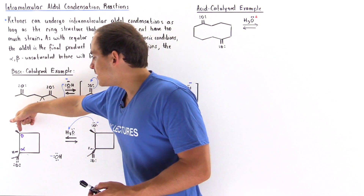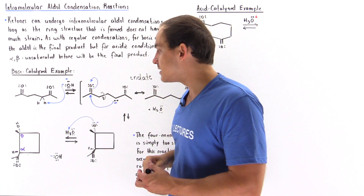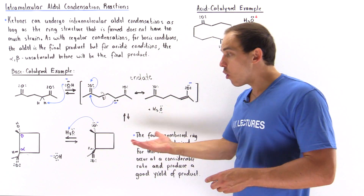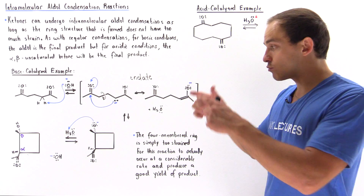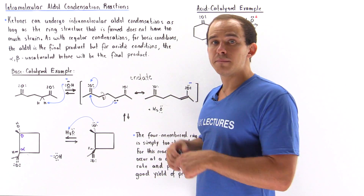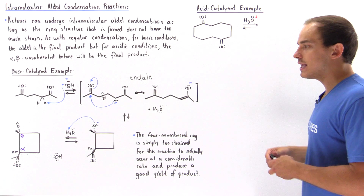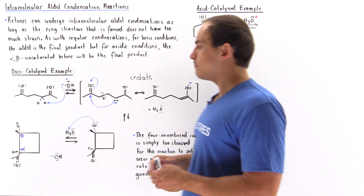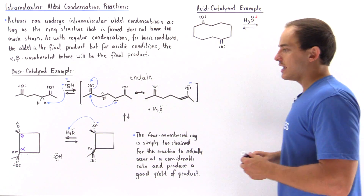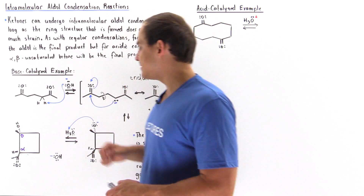The four-membered ring is simply too strained for this reaction to occur at a considerable rate and produce a good yield. However, if we instead had five or six bonds — a pentane or hexane ring — that structure would be stable, because five- and six-membered rings are relatively stable compared to this four-membered ring, in which the angles are 90 degrees.